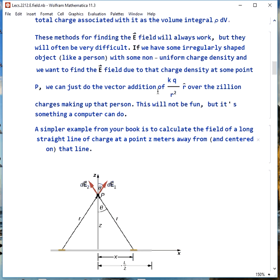all you really have to do is kq over r squared, the vector sum of those, over all the zillion charges that make up that object. This is the kind of thing that a computer could do because it's relatively simple and mindless, and you can't make any mistakes. It's not the way you want to do it as a person.